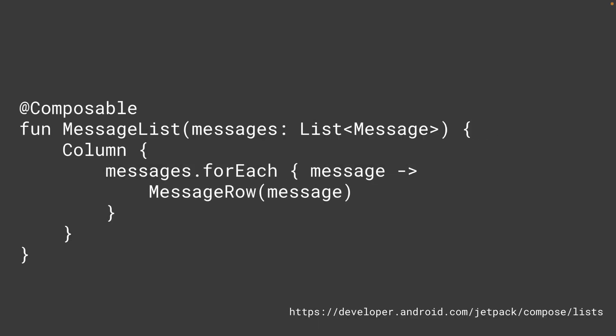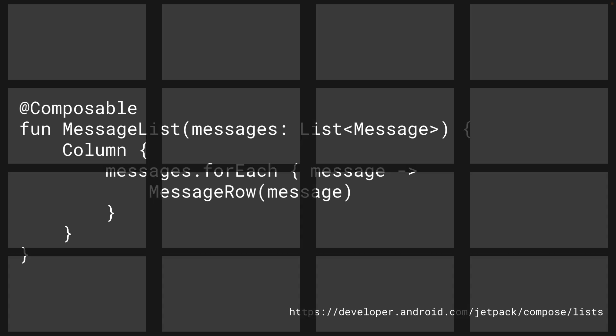Almost every app needs to display a collection of items. If you know that your use case does not require any scrolling, you may wish to use a simple column or row and emit each item's content by iterating over a list like this.